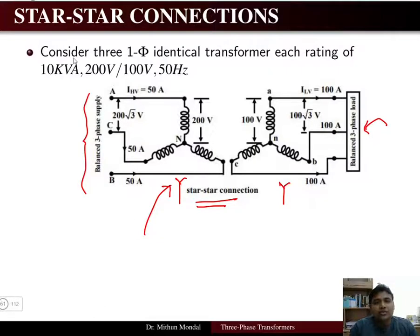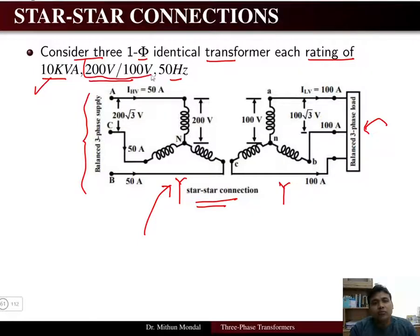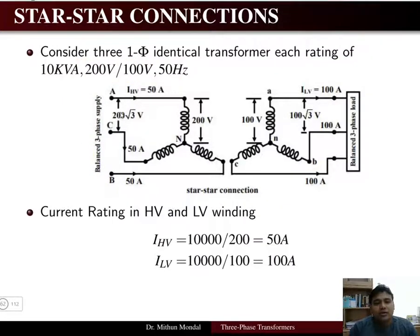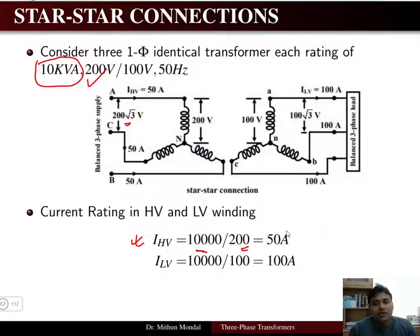Consider a bank of three identical single-phase transformers, each rated 10 kVA, 200 V / 100 V, 50 Hz. When connected in a star-star network, the phase voltage on the high-voltage side is 200 V. The current on the high-voltage side is 10,000 divided by 200 V, giving 50 amperes drawn from the primary winding.